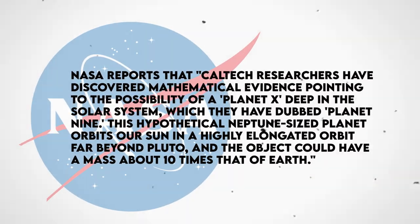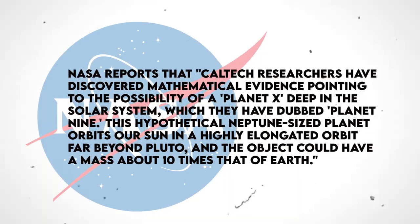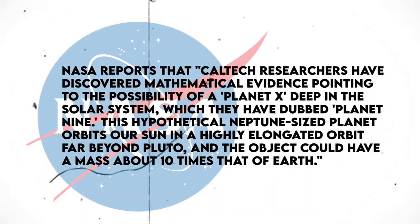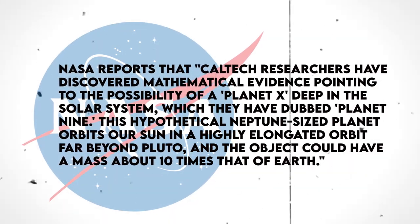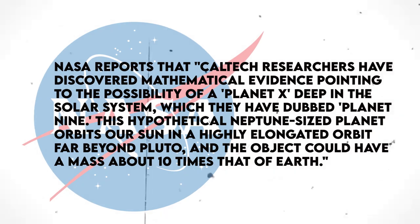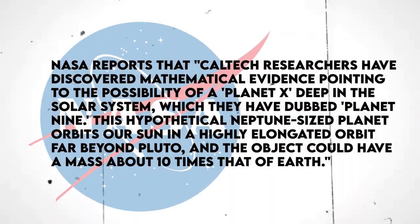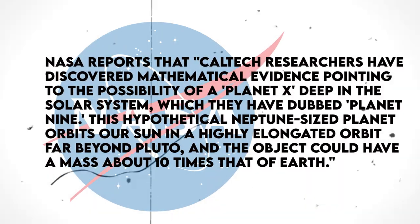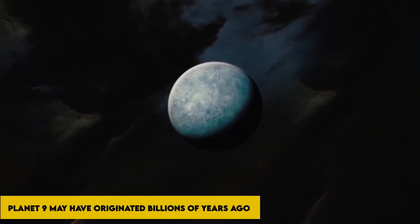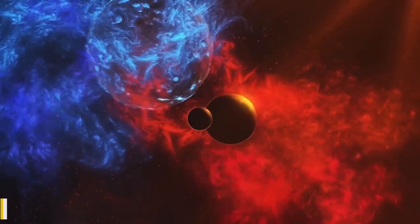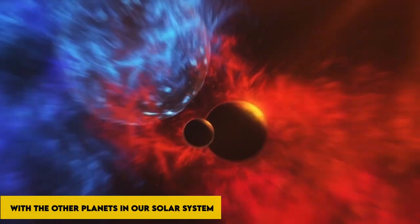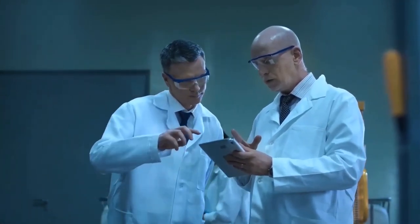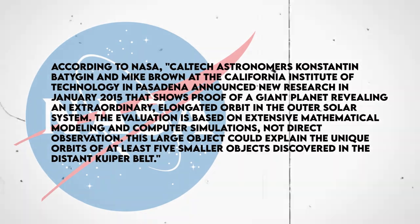NASA reports that Caltech researchers have discovered mathematical evidence pointing to the possibility of a planet X deep in the solar system, which they have dubbed Planet 9. This hypothetical Neptune-sized planet orbits our sun in a highly elongated orbit far beyond Pluto, and the object could have a mass about 10 times that of Earth. Planet 9 may have originated billions of years ago with the other planets in our solar system, or it may have only passed through briefly to cause a stir before vanishing once more.